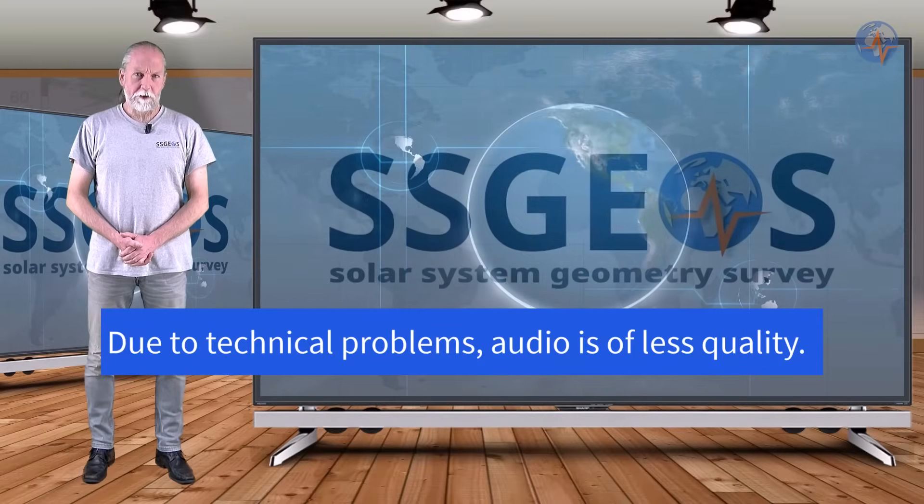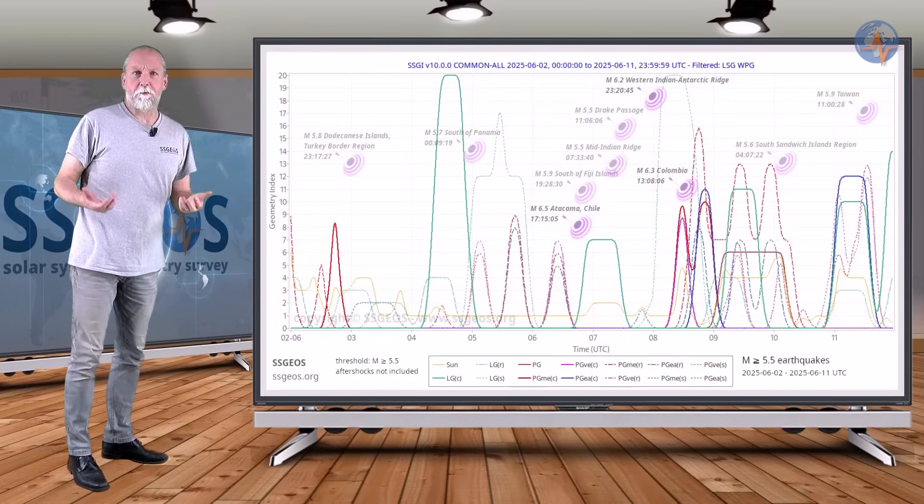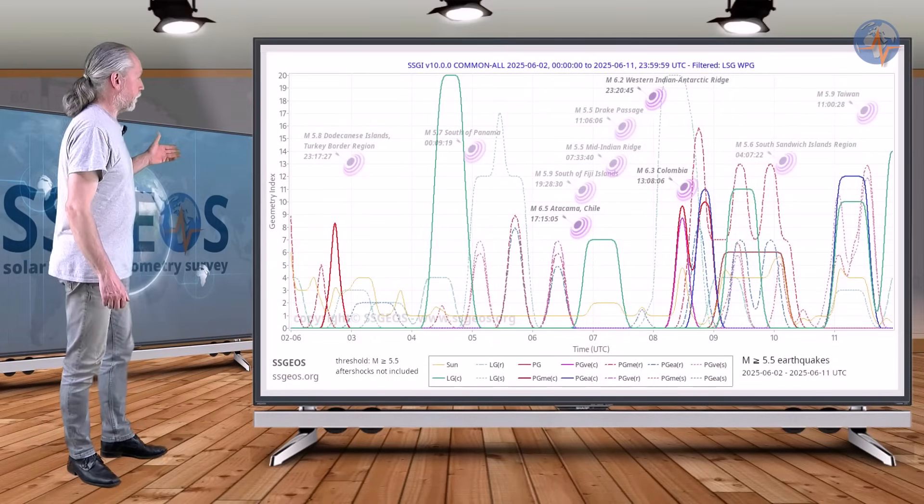Welcome to a new planetary and seismic update. On the SGI graph we see the stronger earthquakes magnitude 5.5 and larger in the previous time frame from the second to the eleventh.